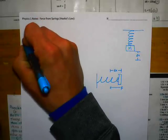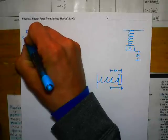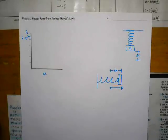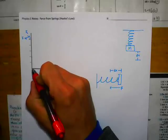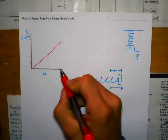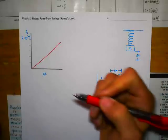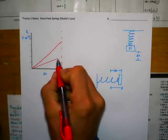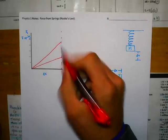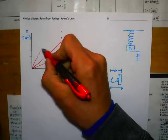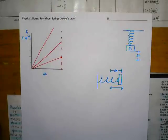We can graph this with Fs (the spring force) on the vertical axis and delta x (how far we're stretching or compressing) on the horizontal. For a medium-weight spring, the force goes up as we stretch it. For a lighter spring, it's easier to stretch the same distance, so the graph has a lower slope. For a really tough spring like a shock absorber, the graph might have a much steeper slope.